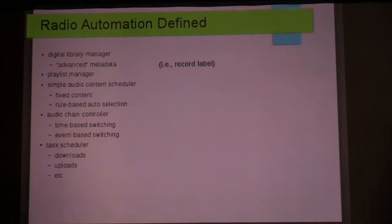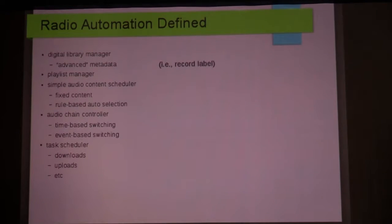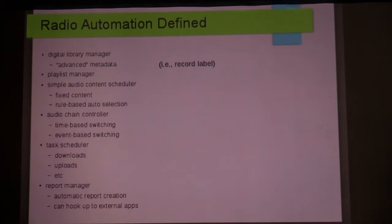A task scheduler handles generic tasks: downloading things from the internet, uploading stuff. If you want to build podcasts based on what you're putting out on the air, you should be able to do that with your automation system — and you can do that with Rivendell. You can also schedule a task to check the condition of your library. And last but not least, some kind of report manager where you can define reports and have them generated either on demand or on a scheduled basis using the task scheduler.